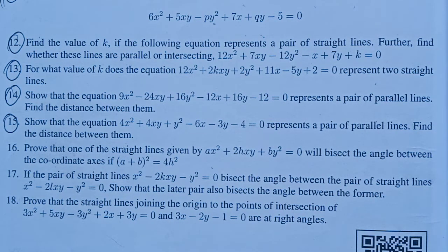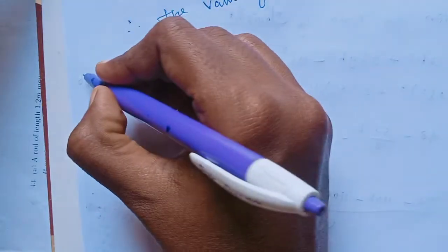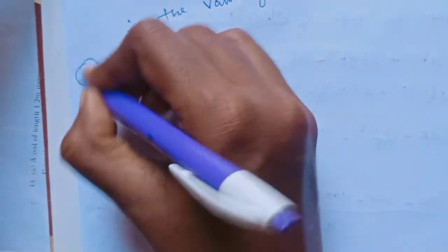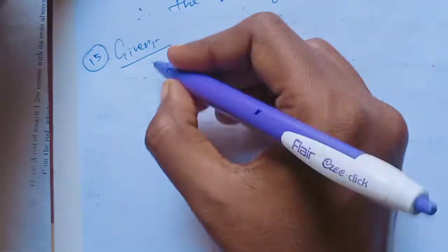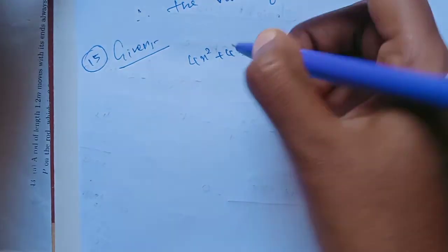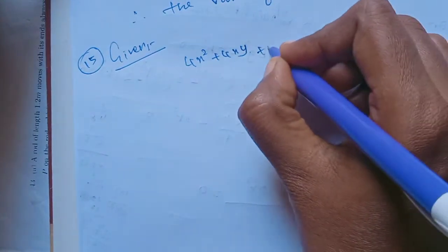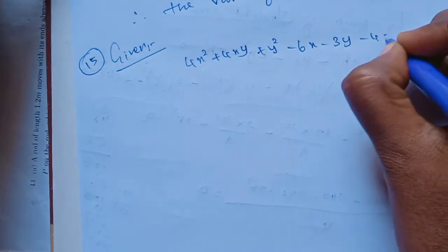First we will prove that the given equation represents a pair of parallel lines, and then we will find the distance. To do that, first we write down the given equation: 4x² + 4xy + y² - 6x - 3y - 4 = 0. Then we compare it with the general equation to extract the values a, b, g, h, f, c.